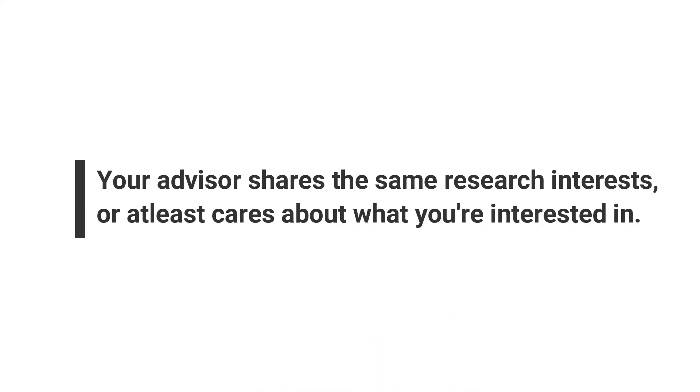The number one thing you have to look for is that your advisor shares your research interests. If you get an advisor that shares your research interests, they are very likely to put more energy into your work, more likely to be excited about publishing with you, more likely to recommend you, and you are more likely to graduate faster. Even if your advisor's active research agenda doesn't fully align with yours, your advisor should be curious about what you want to study. That's how you're going to succeed.